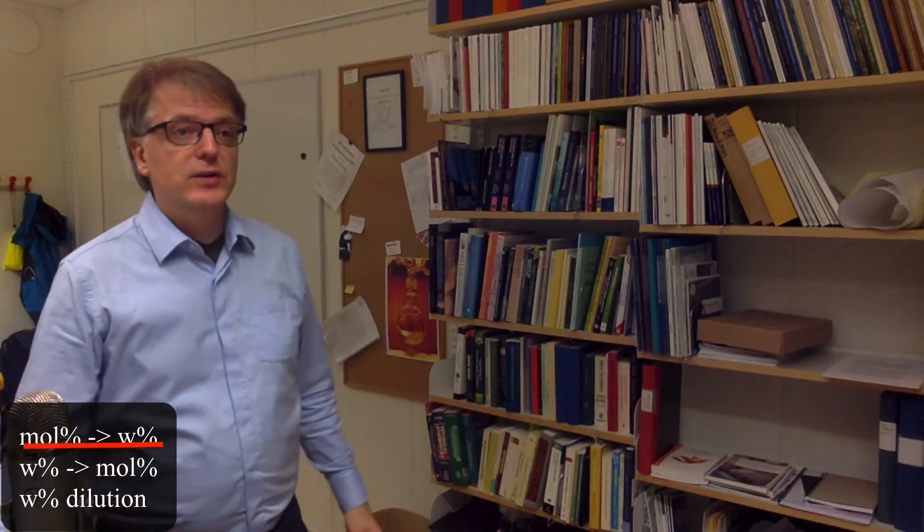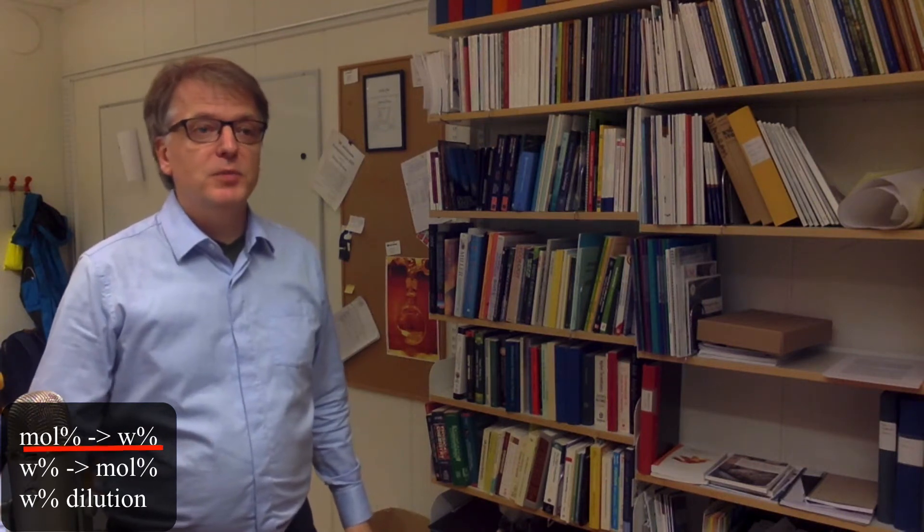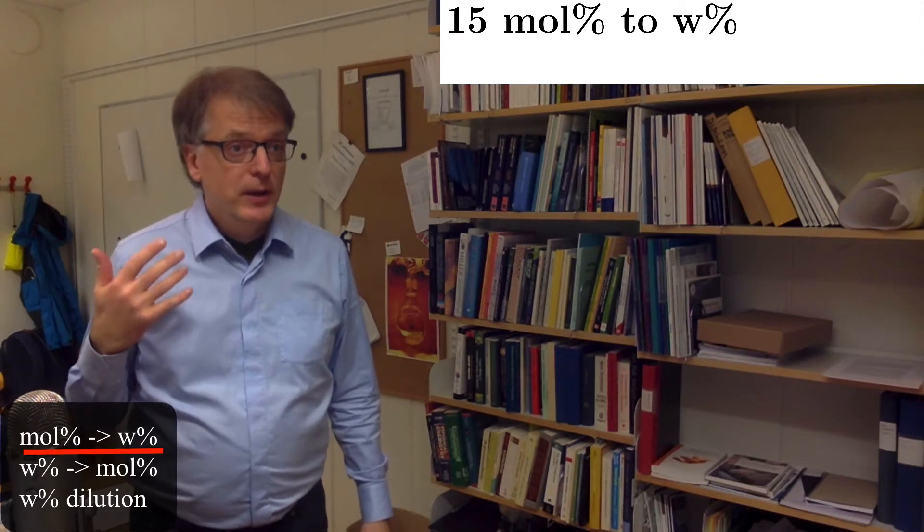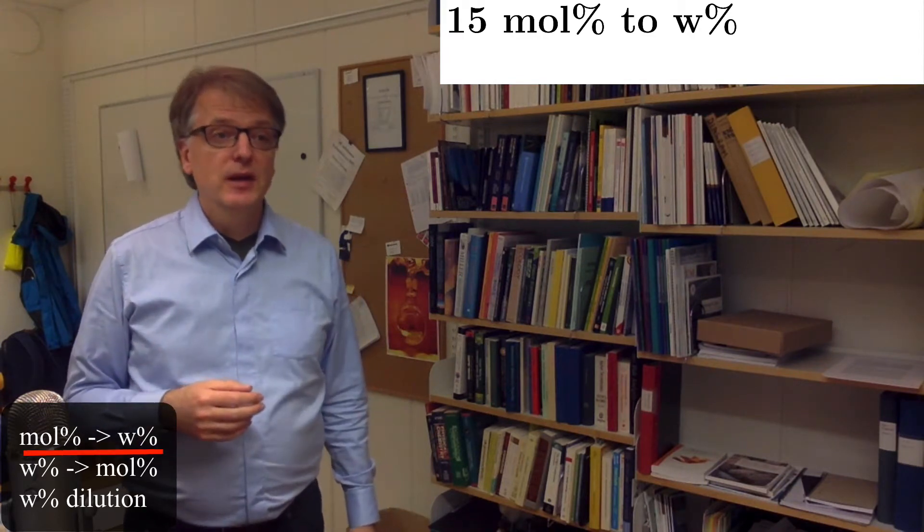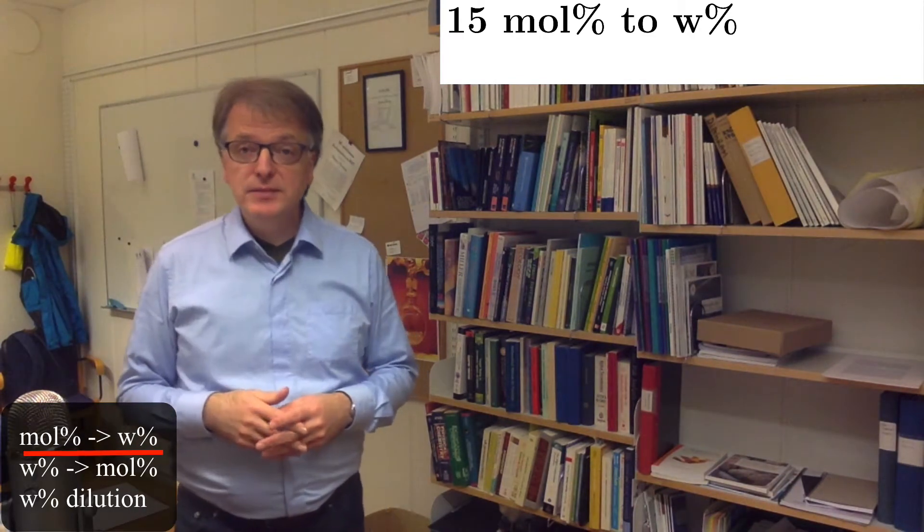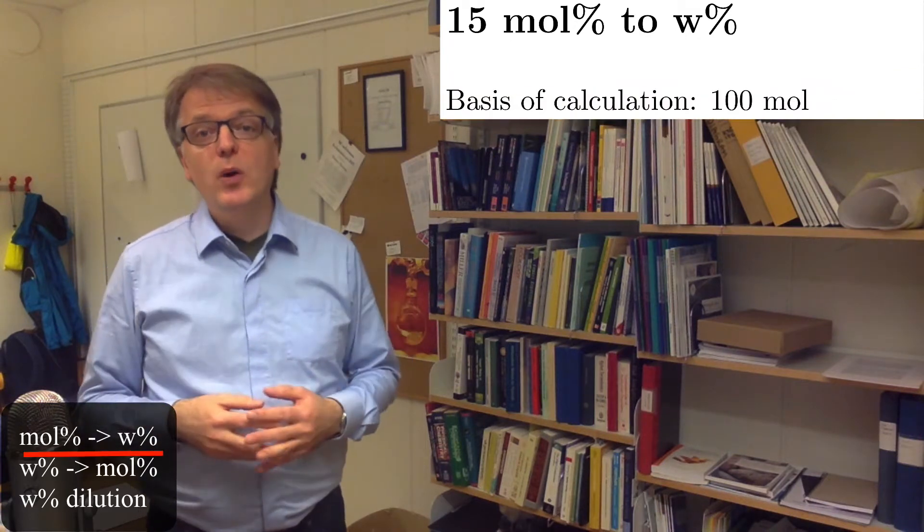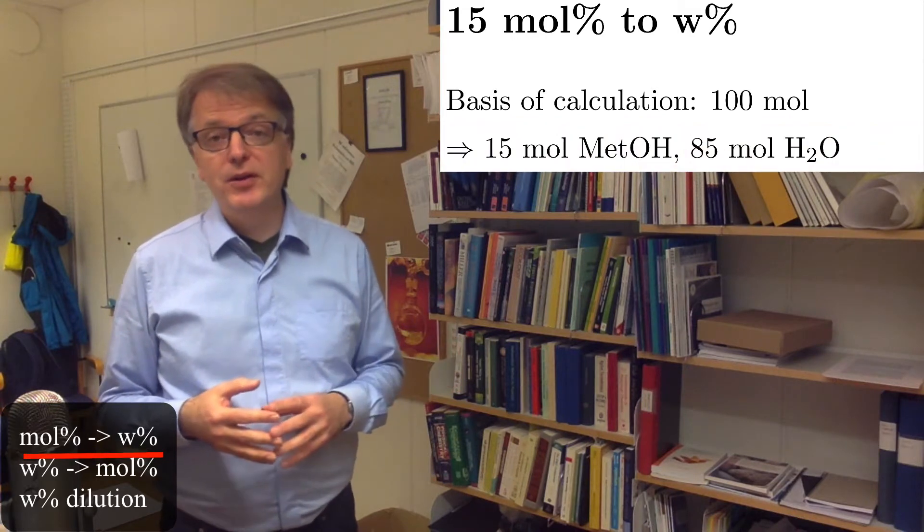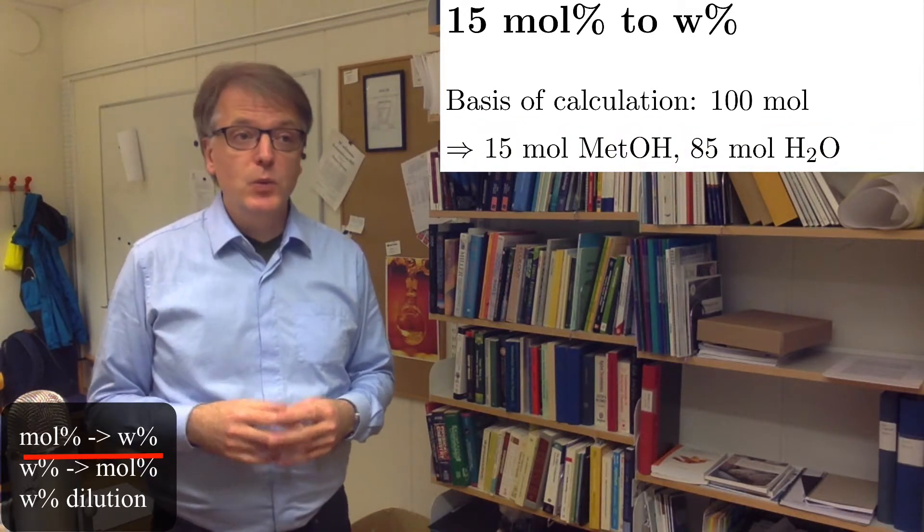Okay, let's turn to the first one. You have 15 mole percent of methanol and we want to know what the weight percentage is. Let's use a basis of calculation. To make it simple, we assume 100 moles in total. That means we have 15 moles of methanol and 85 moles of water.